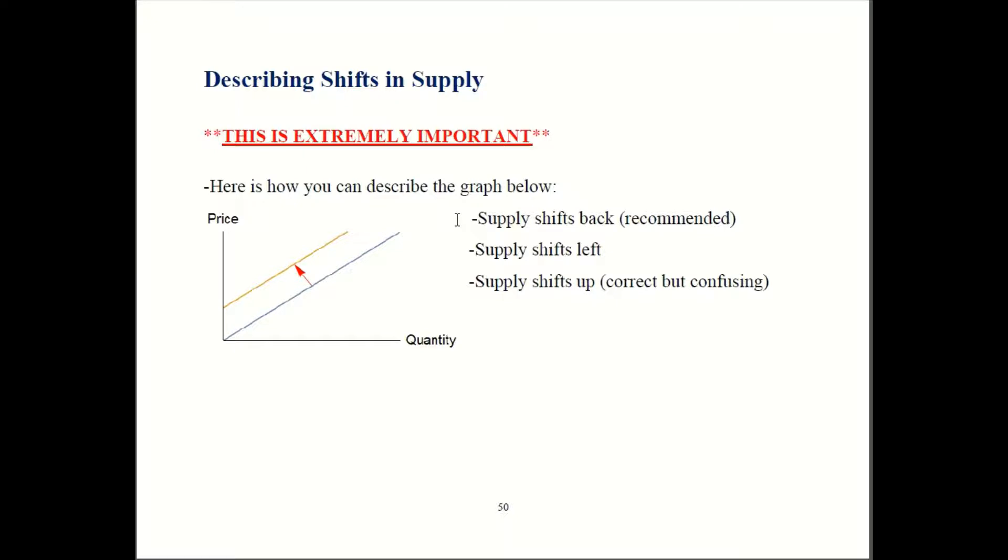So here's why. In our intuition, we often associate up with more. In this case though, supply shifts up actually means that we're supplying less. So if price were, let's say, over here, we originally produced this amount. Now once supply shifts, we're only going to produce this smaller quantity back here. So supply shifts up actually means less supply, not more supply.